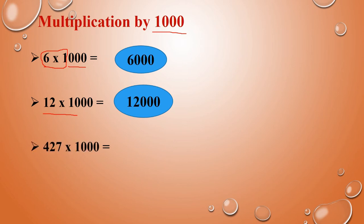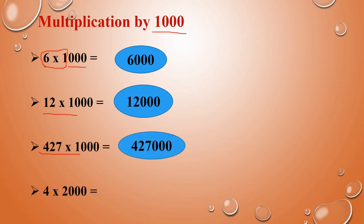Next: 427 into 1000. The number alone — 427 into 1, that is 427. You have to add 3 zeros. So the answer is 427,000.